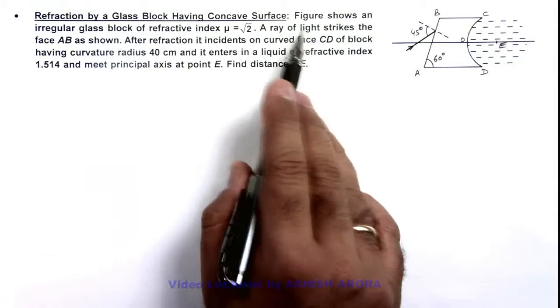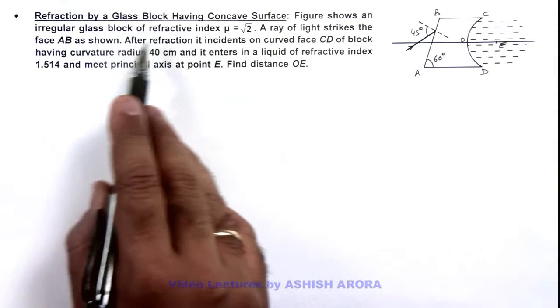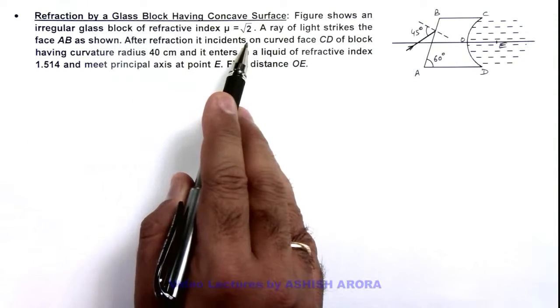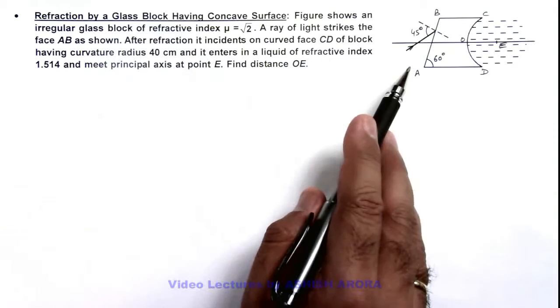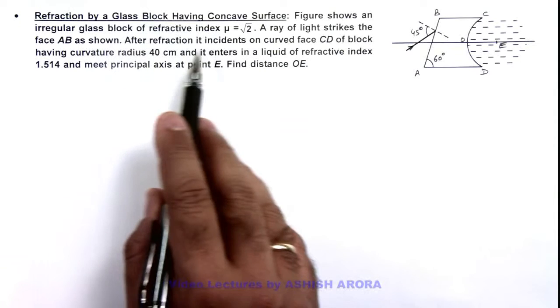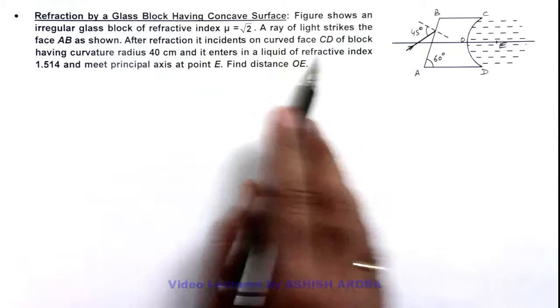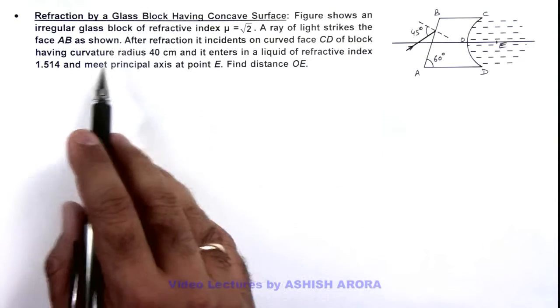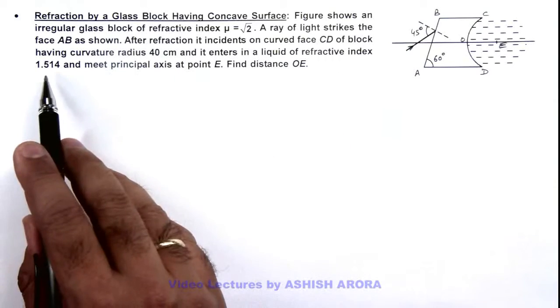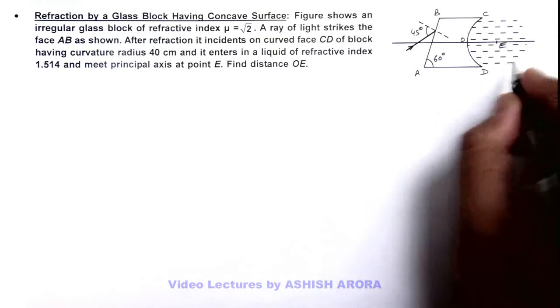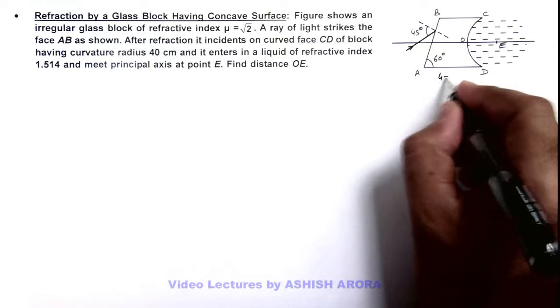Here you can see the figure shows an irregular glass block of refractive index root 2, and a ray of light strikes the face AB as shown. After refraction, it is incident on the curved face CD of the block having curvature radius 40 centimeters, and it enters in a liquid of refractive index 1.514.